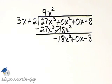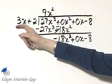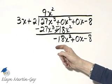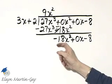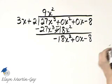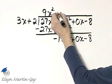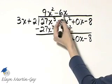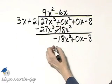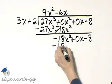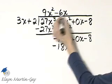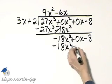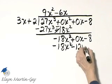What times 3x is negative 18x squared, or you can think of what is this term divided by this term. Either way, you'll have negative 6x. And let's multiply. Negative 6x times 3x, that's negative 18x squared, just like we want. Negative 6x times 2, that's minus 12x.